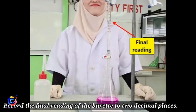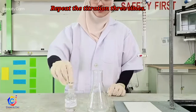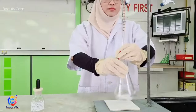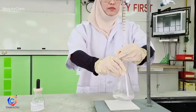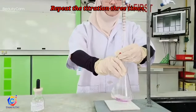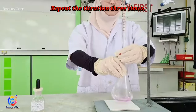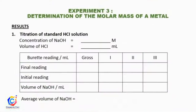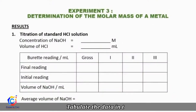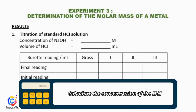Continue your titration until you get a permanent pale pink colour. Record the final reading of the burette. Now, for the actual three titrations, you need to repeat it three times, and the pink colour must be very light, unlike the one for the gross reading. When you have finished, tabulate the data in the data sheet and calculate the concentration of the HCl solution.